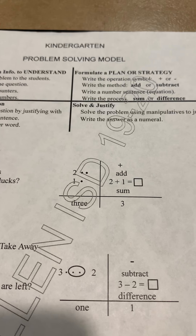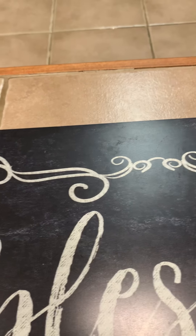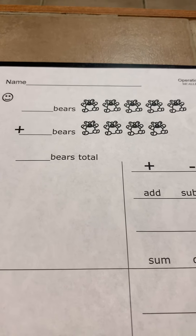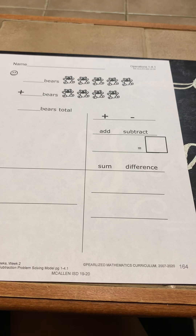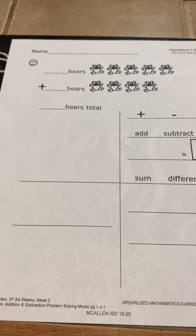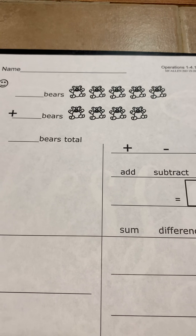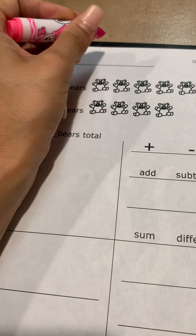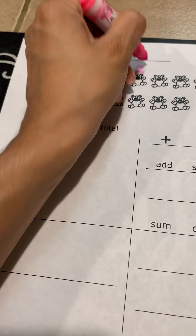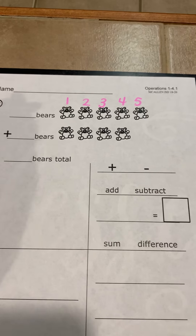Let's begin with another example. For those who have this page, it's page 164 in their binders. If you don't, you can just follow along. We have five bears — let's count them: one, two, three, four, and five. So we write the number five.